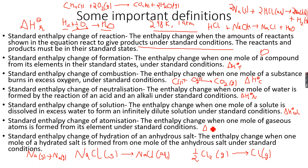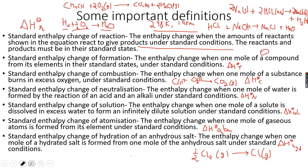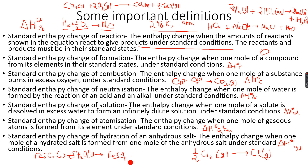The standard enthalpy change of hydration of an anhydrous salt is the enthalpy change when one mole of a hydrated salt is formed from one mole of the anhydrous salt under standard conditions. This is denoted by ΔH°hyd. An example: FeSO₄ solid (the anhydrous salt) plus 5H₂O liquid gives FeSO₄·5H₂O — and remember how we write hydrated salts.